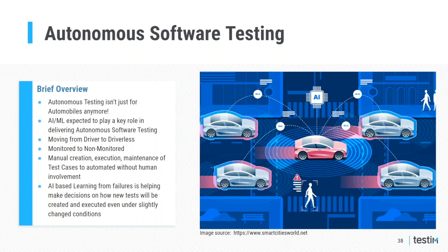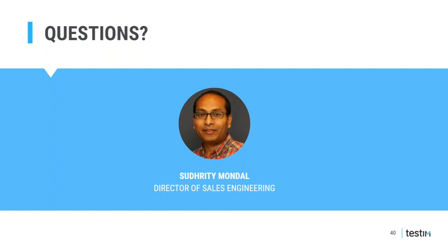Currently, autonomous solutions in software testing are still in their infancy. Functional testing tools have adopted various forms of autonomous capabilities — from discovering application structure to predictive self-healing to intelligent bug hunting. However, end-to-end autonomous testing solutions have yet to be developed at production scale or adopted by large enterprises.